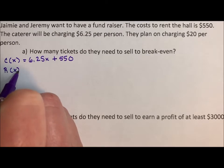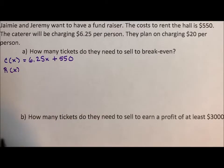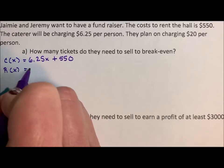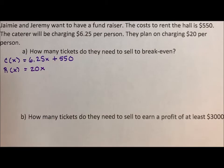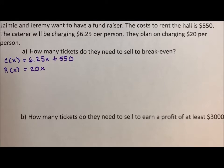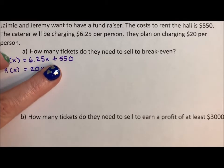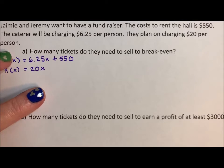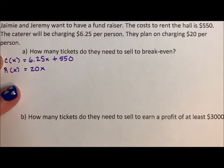They're making money for the fundraiser — they're making $20 per person. But at the beginning, all that $20 is going towards the caterer and it's going towards the hall. It's not actually right away going towards whatever the fundraiser is going towards.